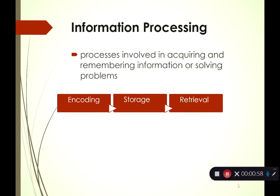Making use of information in the environment — thinking about it and doing something with it. The definition from your book is that information processing involves processes of acquiring and remembering information or solving problems. This is often imagined as a three-stage process: encoding, storage, and retrieval. Encoding is sensation and perception — getting light into your eyes, sound waves into your brain. Your brain categorizes it, stores it in memory, and then you retrieve it.